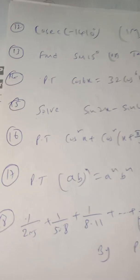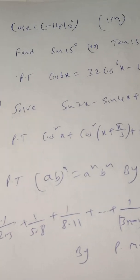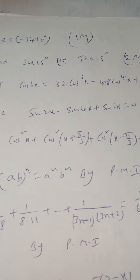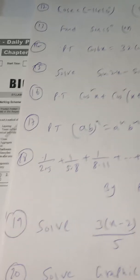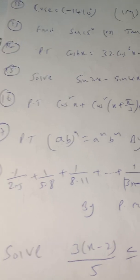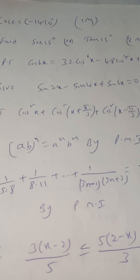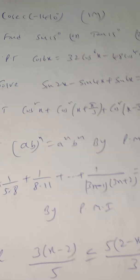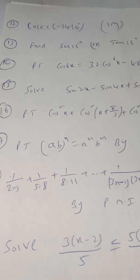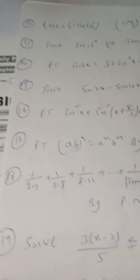In mathematical induction, the expected 5-mark question is: prove that 1/(2·5) + 1/(5·8) + 1/(8·11) + ... + 1/((3n−1)(3n+2)) = n/(6n+4) by the principle of mathematical induction. For any mathematical induction question, the procedure is the same: first substitute n = 1, then assume it is true for n = k, and prove it is true for n = k+1.